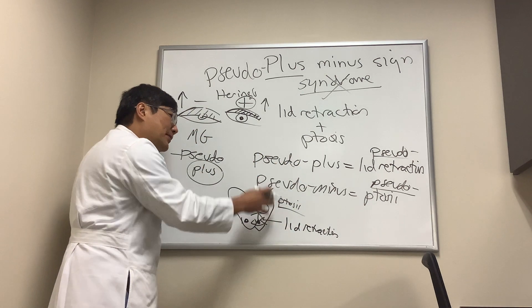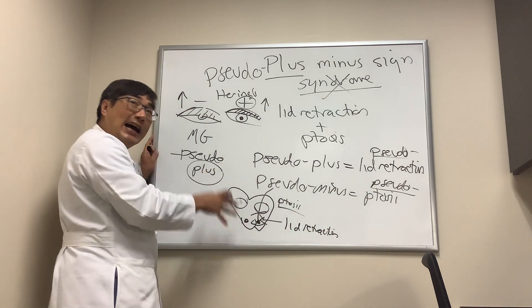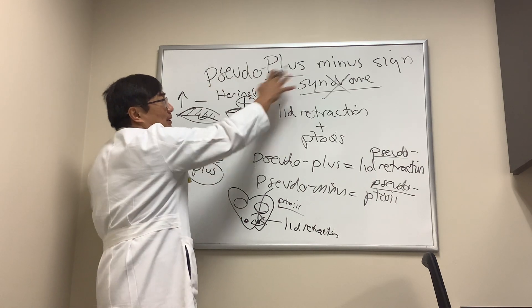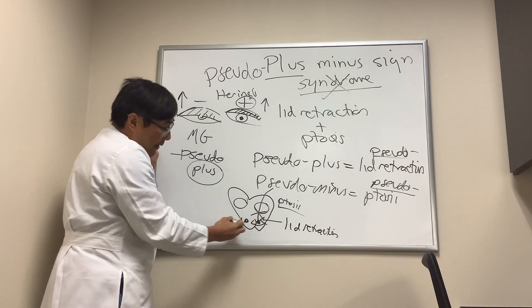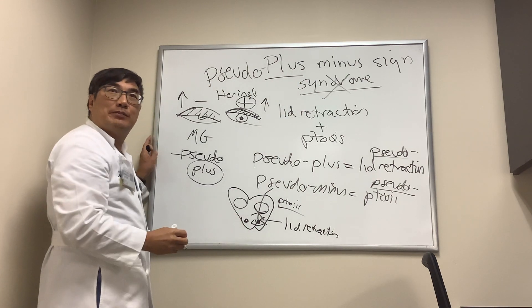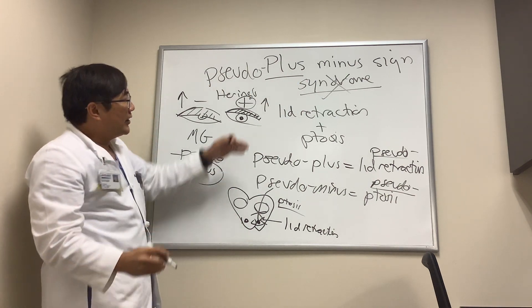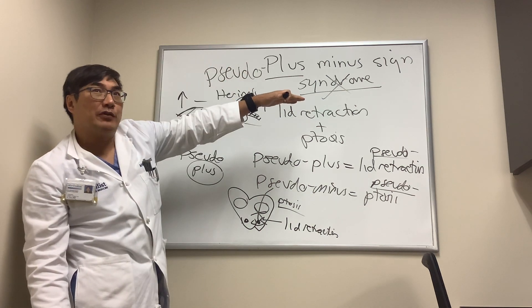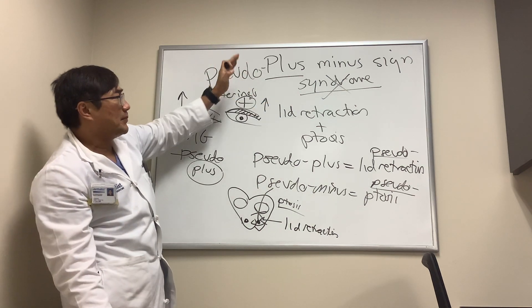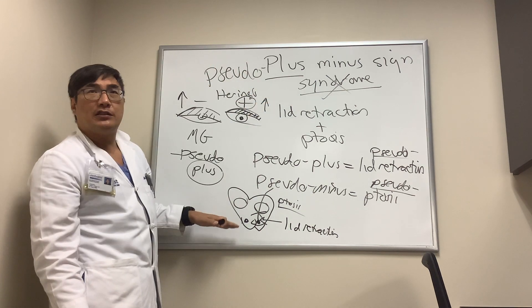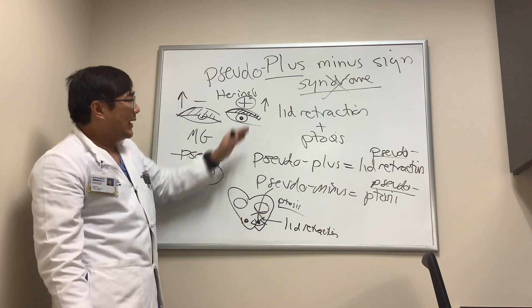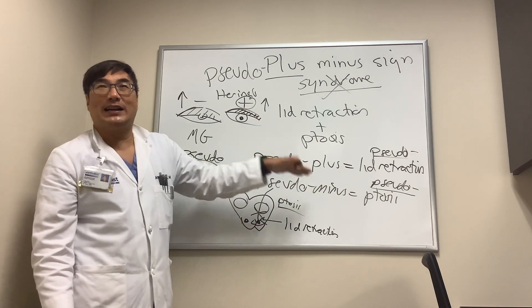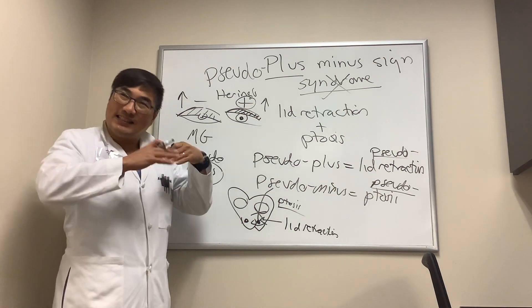That true plus-minus sign can be from the true plus-minus syndrome in the dorsal midbrain. So you need to know the difference between the plus-minus sign — which is what we see — the plus-minus syndrome — which is in the dorsal midbrain — and the pseudo plus or pseudo minus sign.